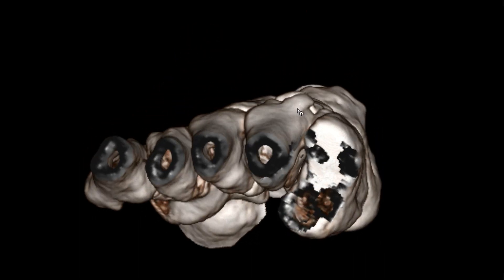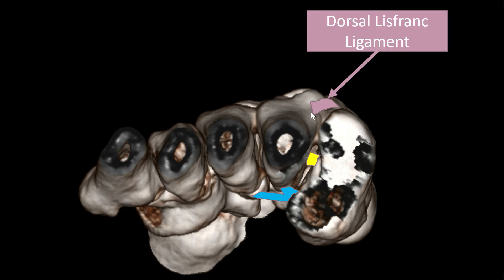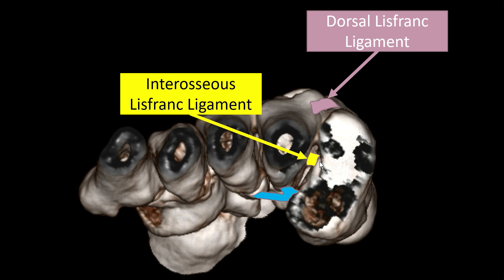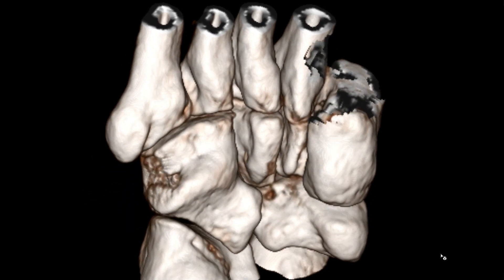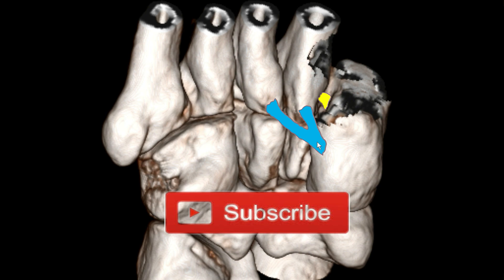In a short axis view you can see the dorsal Lisfranc ligament. In the middle we have the interosseous component, which is the Lisfranc proper. Then on the plantar aspect we have the plantar Lisfranc ligament with its two separate bundles, typically originating from the same area, each one going to the base of the second and third metatarsal bone. This y-shaped ligament is visible in plantar view, with a glimpse of the interosseous component as well.